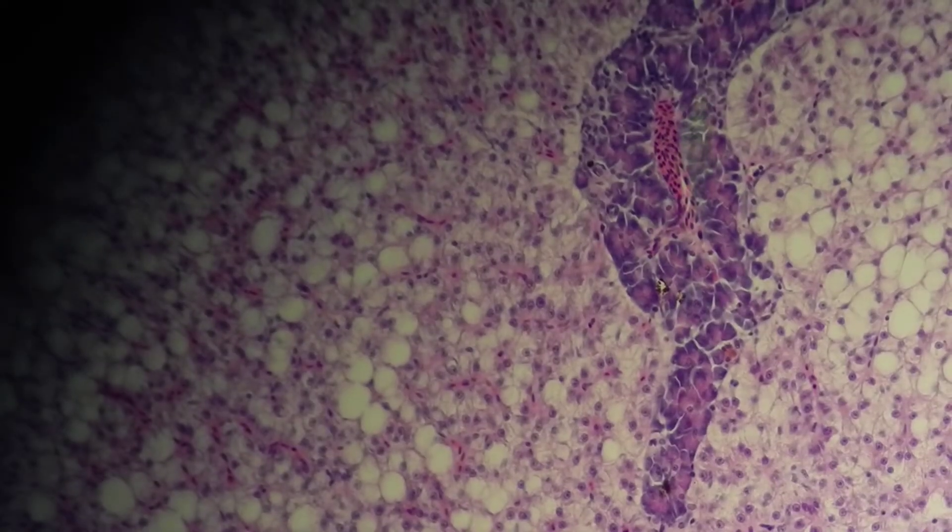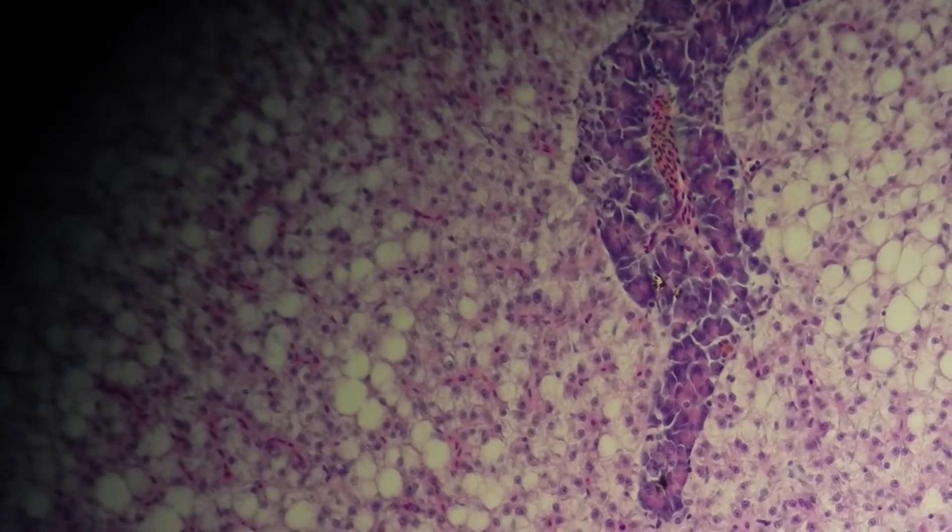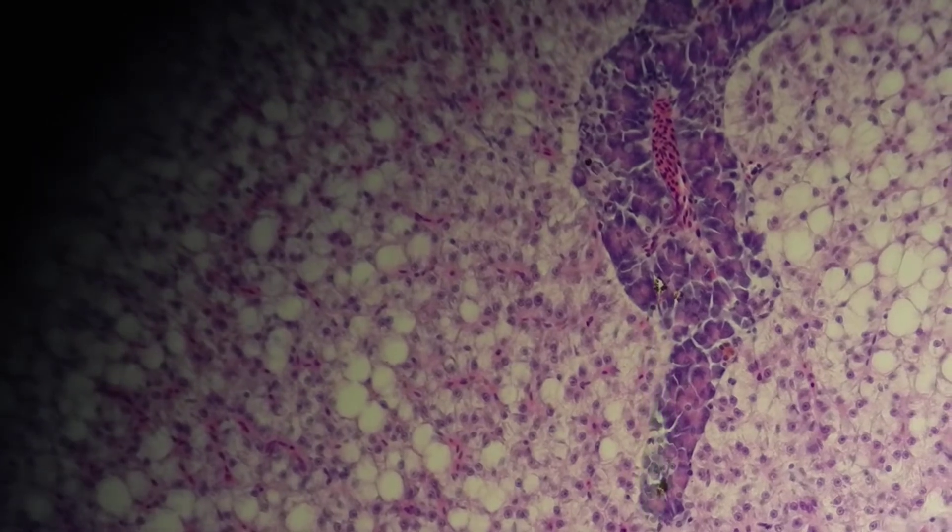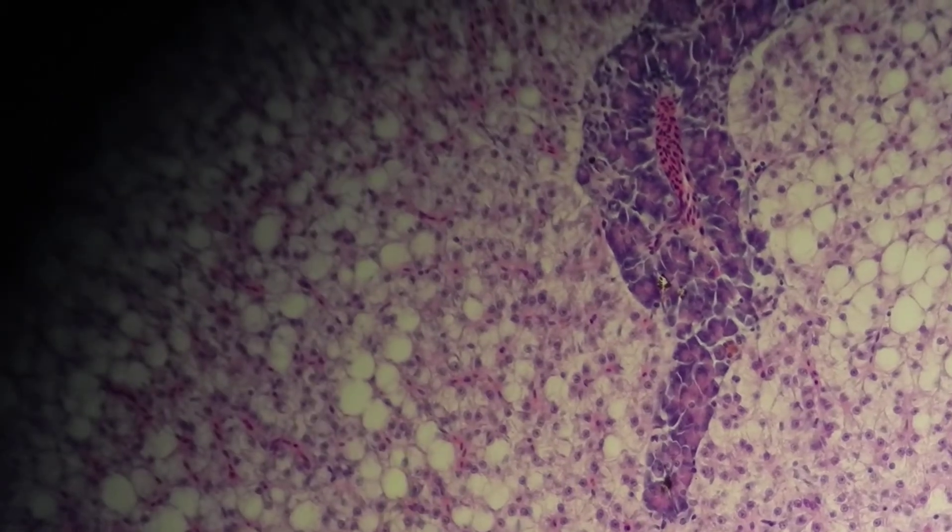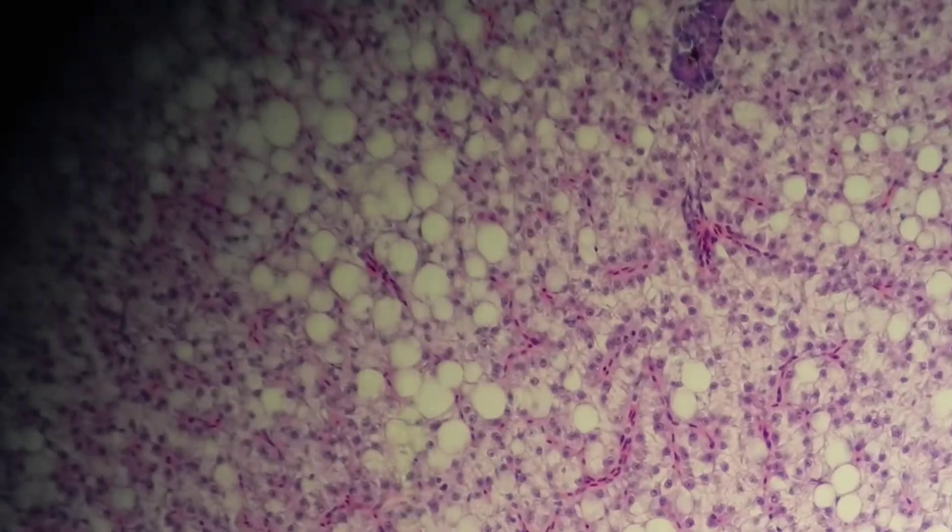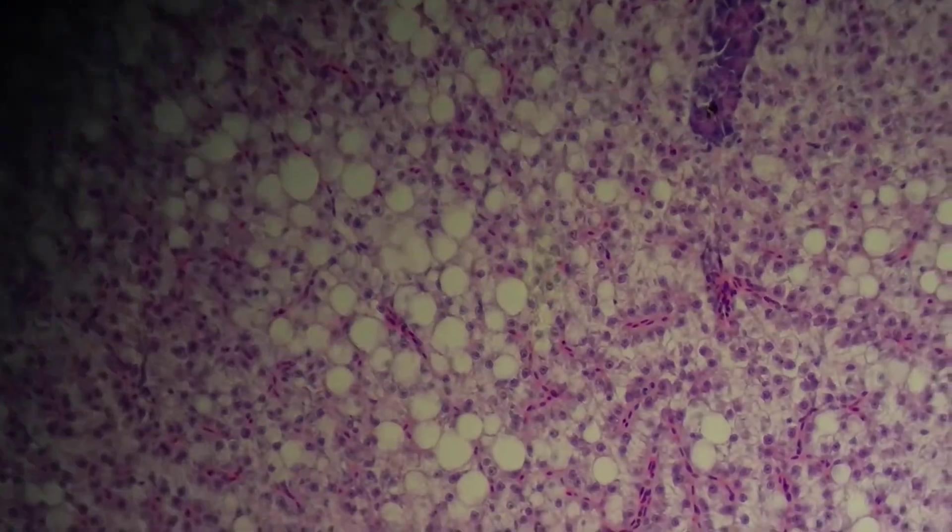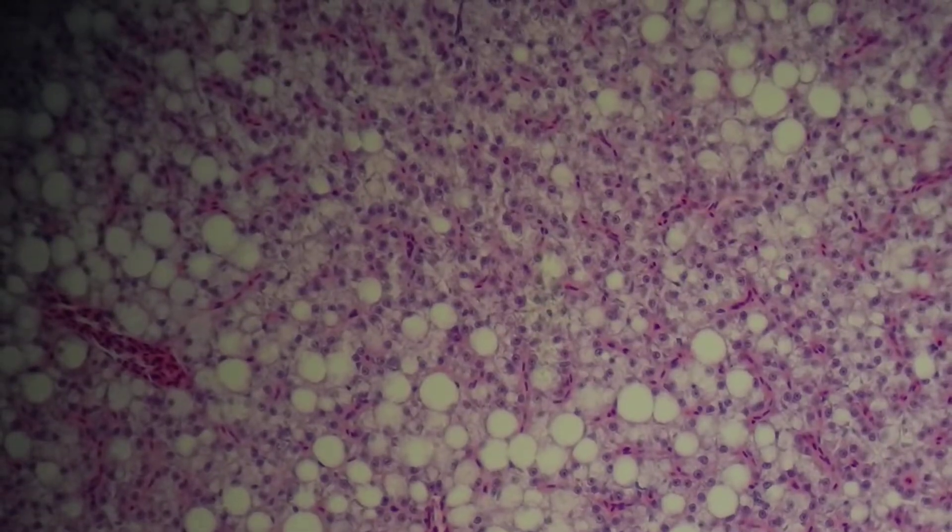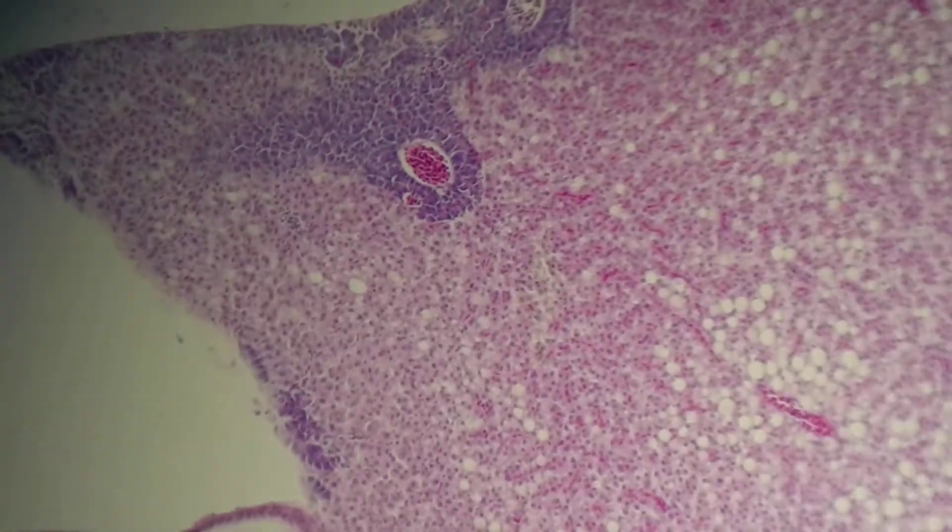And also the pancreas looks not too bad. It's got some of these zymogen granules indicating that it has been eating, but not recently because we've got sort of fewer of these vacuolated hepatocytes. So it's gone off its food recently.